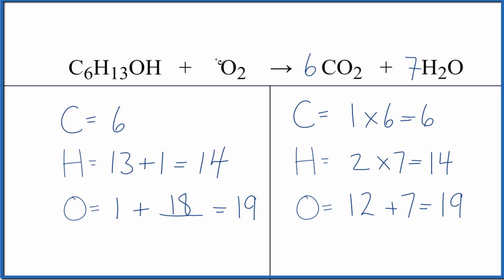So all we really need to do is put a 9 in front of the O2. We have 1 plus 9 times 2, so 1 plus 18. That gives us 19. We're done.